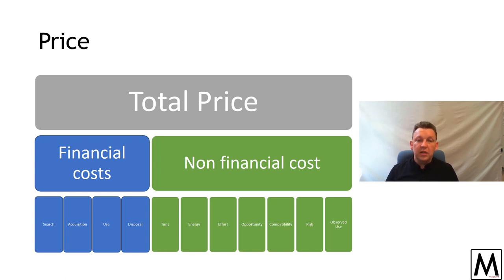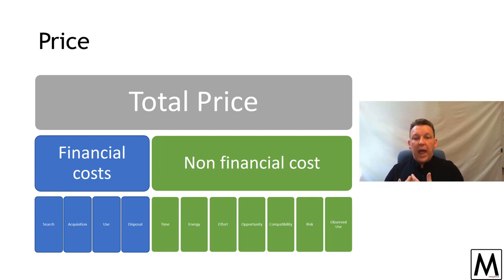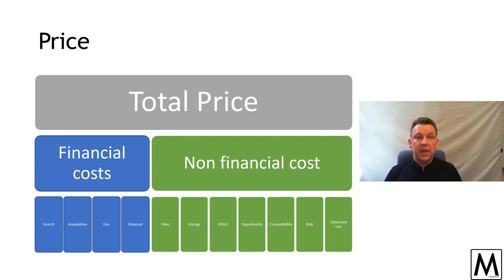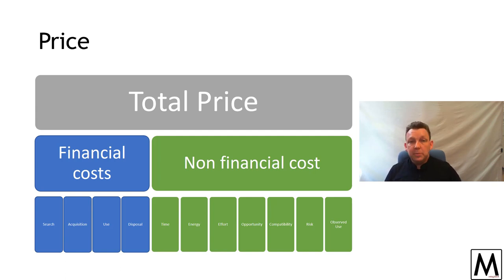There's also compatibility — the extent to which a product fits your existing lifestyle, and the changes required to make it compatible become costs. Some of those changes may cause problems or challenges. Risk — the perception of risk and the actual risks themselves, whether they pay off or not — the perception of danger, challenge, or likelihood of something going wrong becomes part of the overall cost.